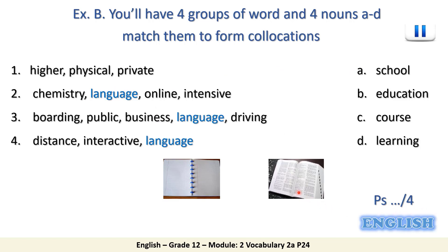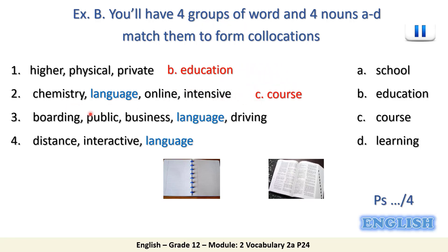We can say: higher, physical, or private education; chemistry course; boarding school; distance learning. You can notice that one word like 'language' can be used more than once — language course, language school, language learning. What you are doing right now is language learning; what I am doing is language teaching.